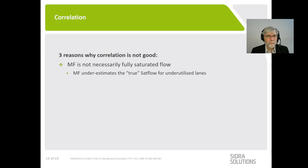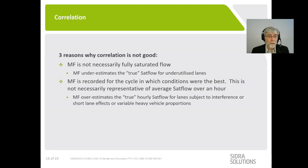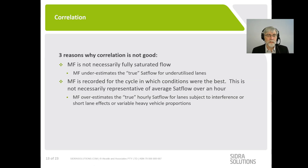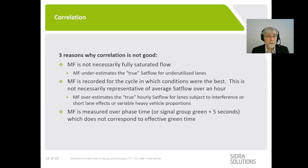There are three reasons why the correlation between MF and saturation flow is not good. First, MF is not necessarily fully saturated flow — for lanes that clear easily in almost all cycles, MF underestimates the true saturation flow. Second, MF is recorded for the cycle with the best conditions, so it's not necessarily representative of the average saturation flow over an hour, meaning it can overestimate for lanes with high cycle-to-cycle variability. Third, applying the phase time over effective green time factor correctly is almost impossible.